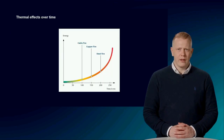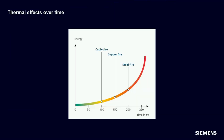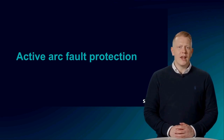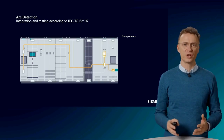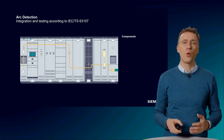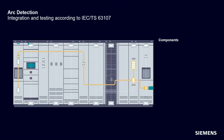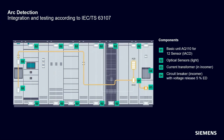Recalling the graph on thermal influence presented earlier, there is an increased risk of fire beginning in the range of temperature rise from approximately 100 milliseconds. Due to the exponential increase, the risk of damage grows with every millisecond. We would like to introduce a way to further reduce the tripping time and thus the energy released — an active arc fault protection through an internal arc fault mitigation system integrated according to IEC Technical Specification 63107.